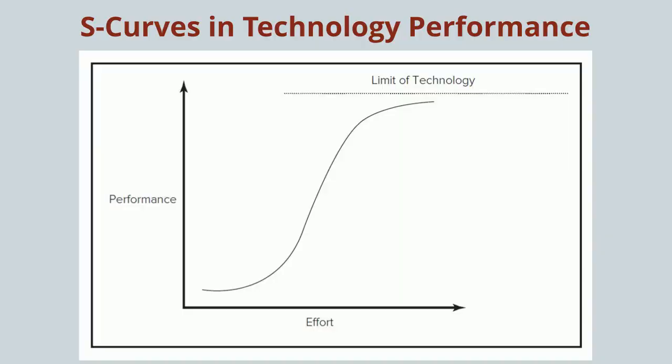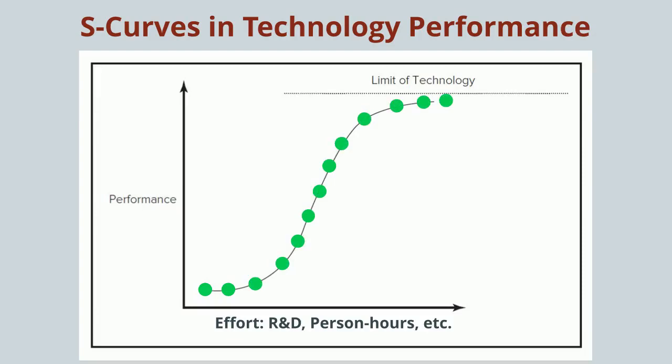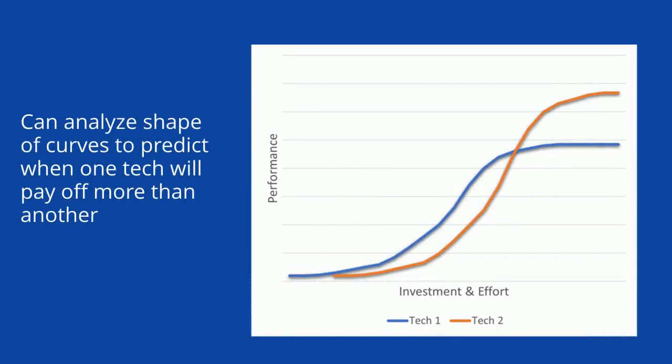If you graph technology performance against effort, it often shows an S-shaped curve. This is because in the beginning, improvement is really difficult — you may not have great information or great inputs, and you make a lot of mistakes. As you accumulate information and inputs, improvement can start to accelerate as your effort has a bigger payoff. Then at some point, the S-curve tends to flatten out again as you approach the limits of the technology. You've solved all the easy and obvious problems, and now improving the technology starts to get really hard again.